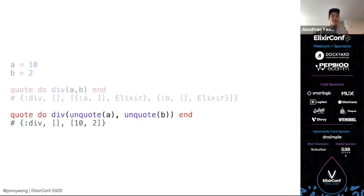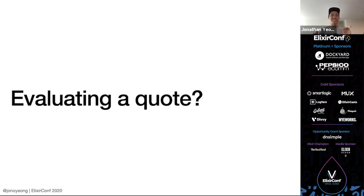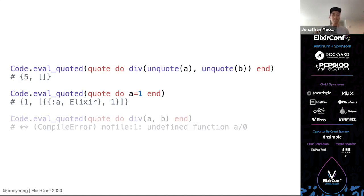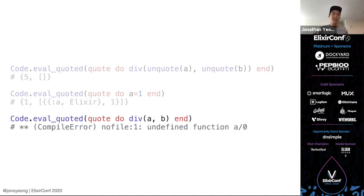So we have a representation of data and a way to alter that data. But what happens when we want to evaluate it? That's Elixir's Code.eval_quoted function. We can run this on a quoted expression and it returns a tuple with two elements: the result of the expression — so 10 divided by 2 is 5 — and any variables assigned. If we quote a = 1, the result is 1 and the variable assigned is a. But if we try to evaluate quote div(a, b) without unquoting, we get a compiler error because a and b are functions we haven't defined.